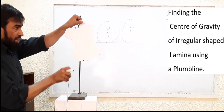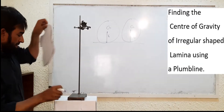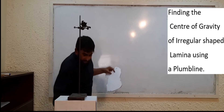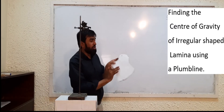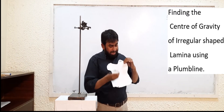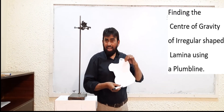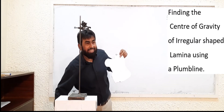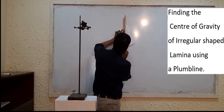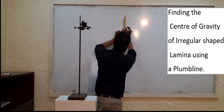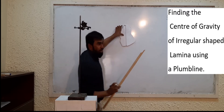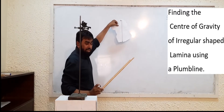Now take the lamina off. This hole I am naming hole A. This is the mark where the thread was touching at the edge. Now join these two points — hole A and the mark — and you will get a straight line like this.